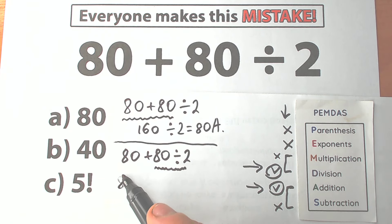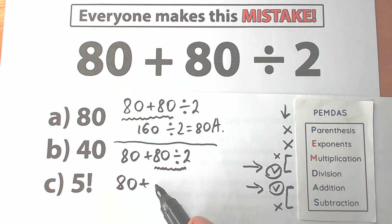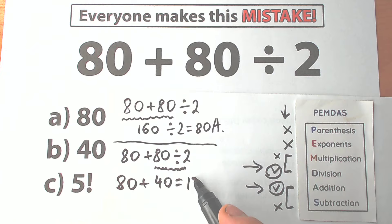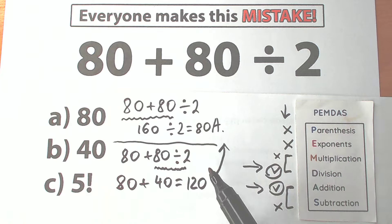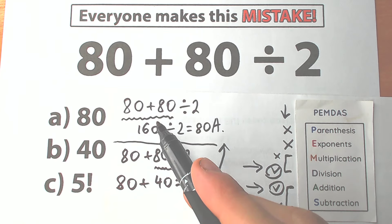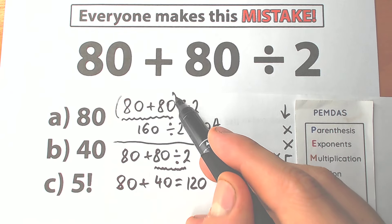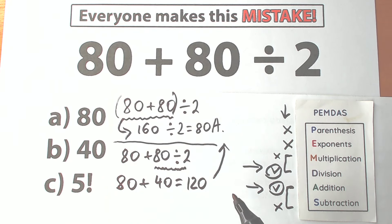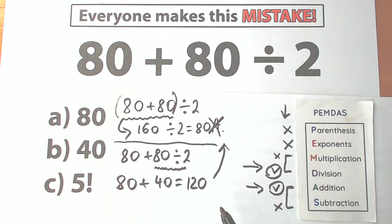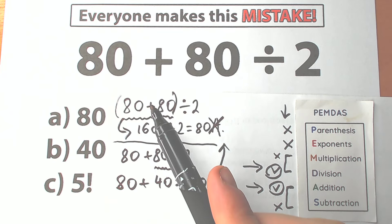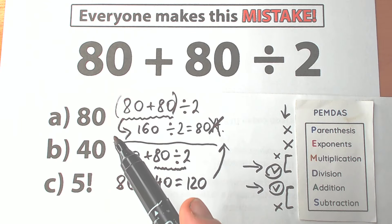So right here: 80 plus 80 divided by 2. We divide first: 80 divided by 2 equals 40. Then 80 plus 40 equals 120. Now, a tricky moment — if we look closely at the options we have 80, 40, and 5 factorial. We don't have 120 listed directly, so a lot of students go back to the wrong answer of 80. But 80 is absolutely wrong because we can't start with addition. With parentheses it would be okay, since parentheses are the first step, but we don't have any parentheses here — so 80 is wrong.